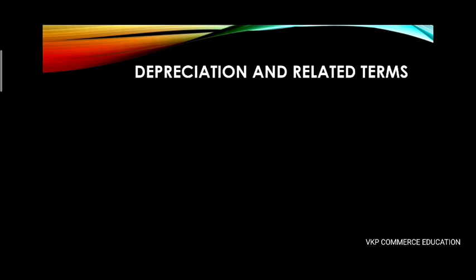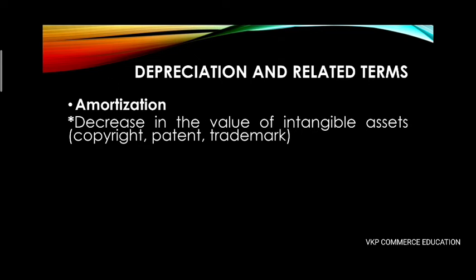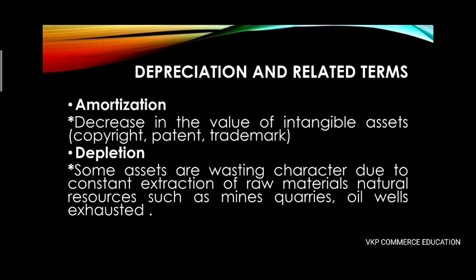Related terms: Amortization refers to the decrease in value of intangible assets such as copyright, patent, and trademark. For intangible assets, the term used is amortization rather than depreciation. Depletion refers to wasting assets — assets of a wasting character due to constant extraction of raw materials from natural resources such as mines, quarries, and oil wells.